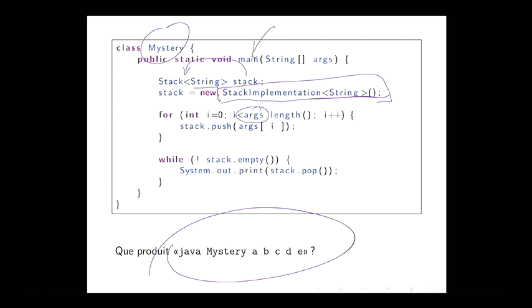Je passe à travers les éléments qui ont été remis sur la ligne de commande, puis je les ajoute à la pile un à un. Dans ce cas-ci, il y a les éléments 0, 1, 2, 3, 4 — cinq éléments sur la ligne de commande. Je les ajoute dans l'ordre où ils sont présentés. Ensuite, on a un idiome, une façon classique d'utiliser les piles : tant que la pile n'est pas vide, faire quelque chose — while not stack.isEmpty(), retire l'élément puis affiche.